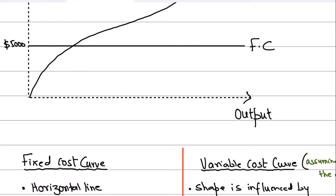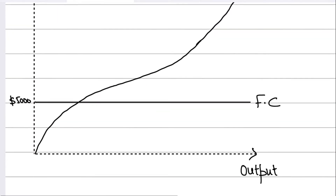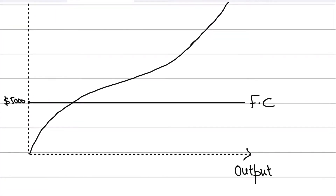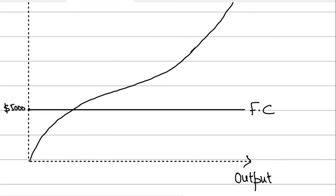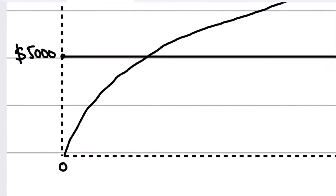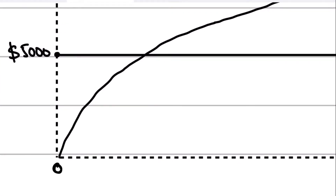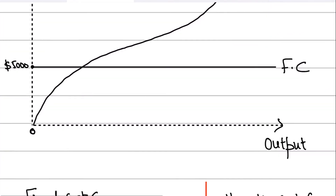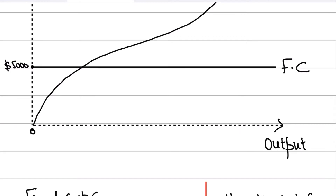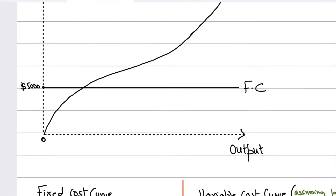The fixed cost curve is simply a horizontal line. I've assumed that the fixed cost is 5,000 — a figure taken from the previous video about a pizza factory. On the x-axis we measure output. Even at an output level of zero units, you're incurring a fixed cost of 5,000. At 200 units, still 5,000. At 1,000 units, still 5,000. That is why the fixed cost line is always drawn horizontally — it is a horizontal straight line.